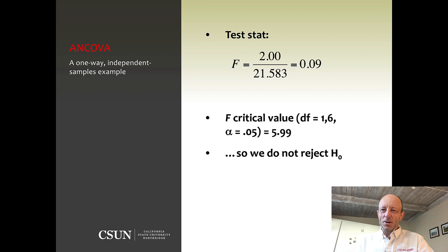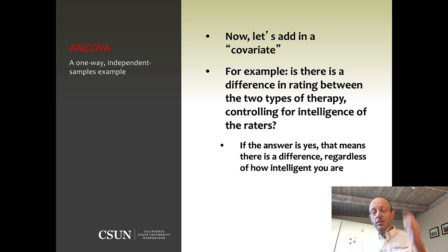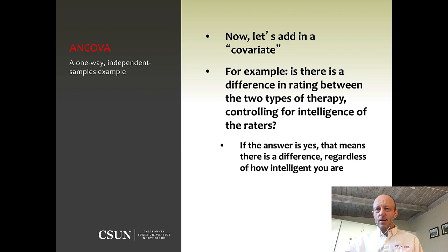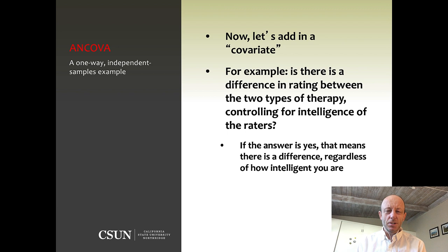Now, if we add in a covariate, there are a couple of different sequences. You could do an ANOVA followed by an ANCOVA — adding the covariate as a step — or you could do it all just as an ANCOVA from the beginning. It just depends on your theory and your hypothesis, so try to follow your hypothesis as closely as you can.